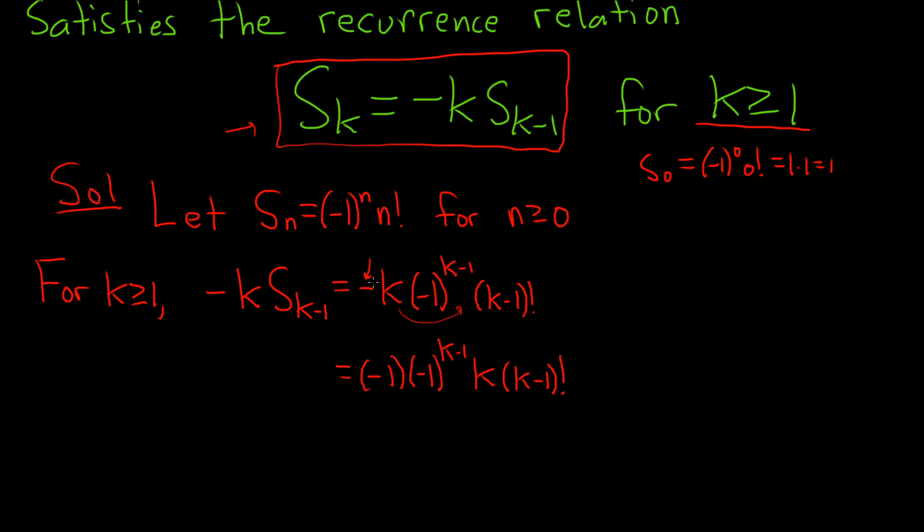The reason I wrote this negative sign as a negative 1 is because we now have negative 1 to the 1 times negative 1 to the k minus 1. And so when the bases are the same, you add the exponents. So we end up getting 1 plus k minus 1. So that's negative 1 to the k. And then k times k minus 1 factorial is just k factorial.